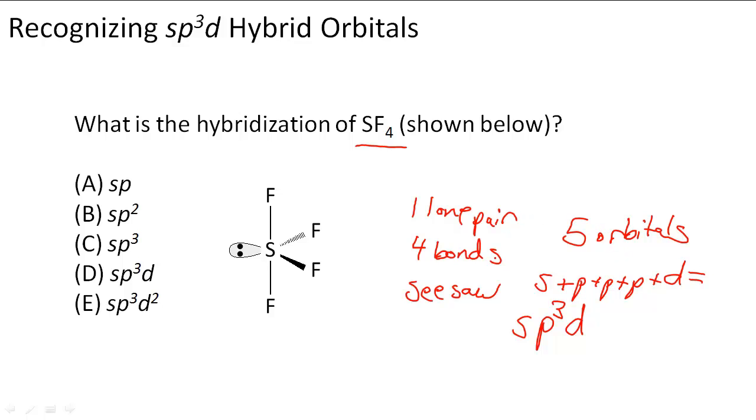And notice that we're talking about the hybridization of S to accommodate F, F, all these four Fs and the lone pair.